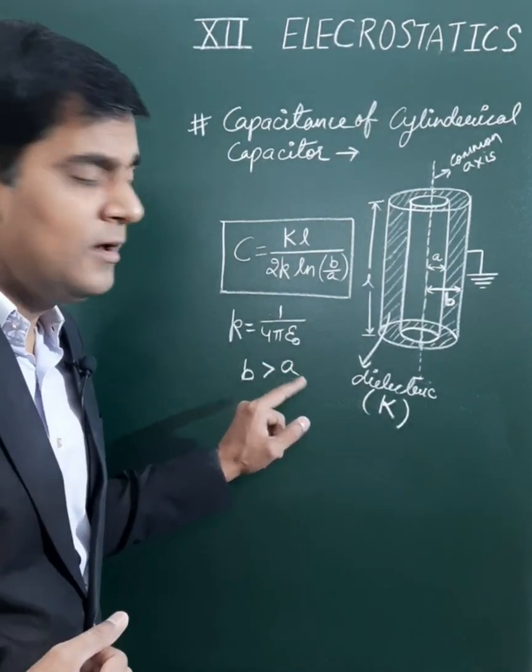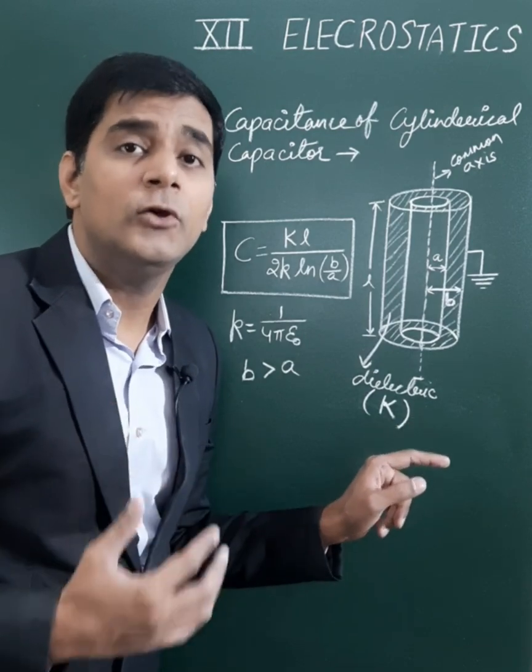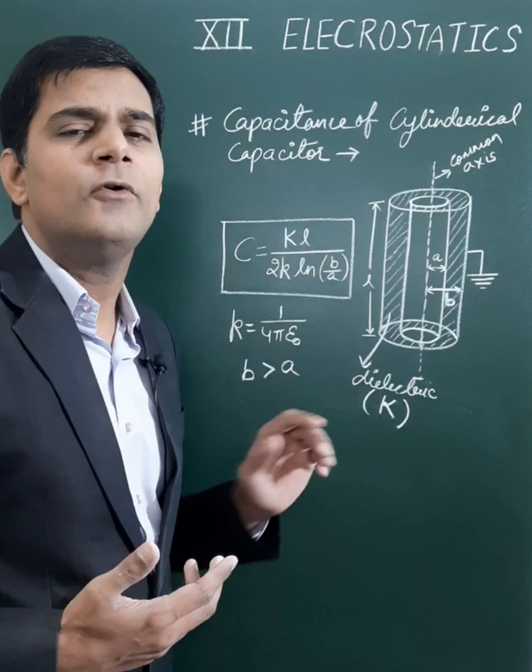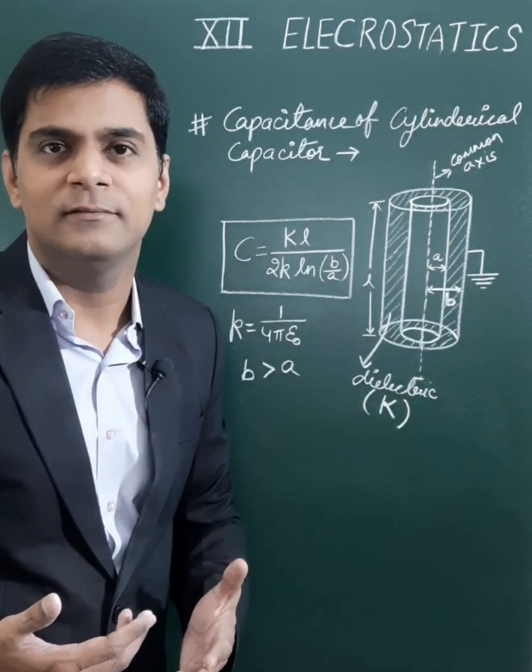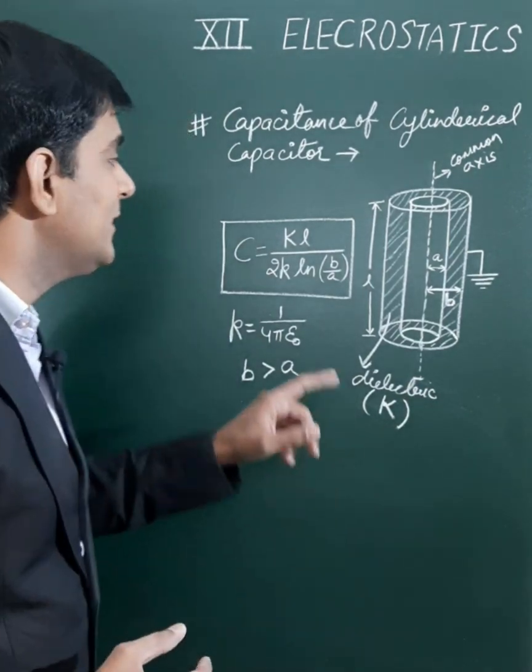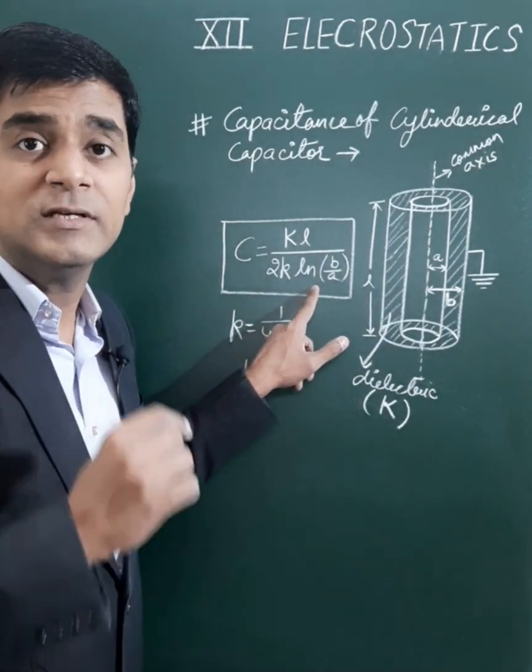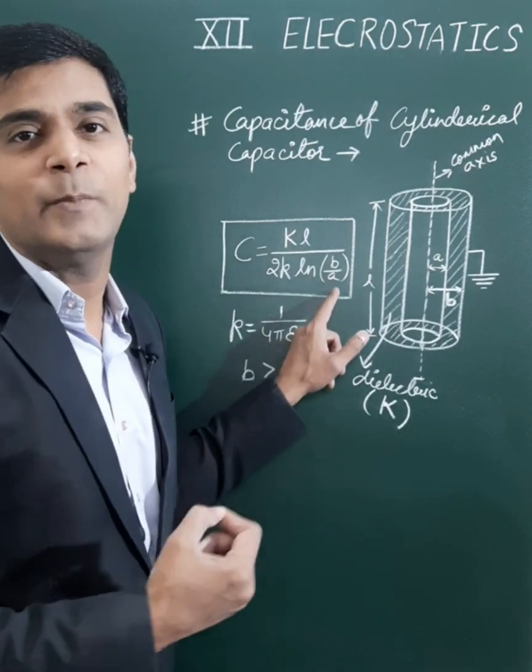If there is air or vacuum in place of this dielectric, then the dielectric constant for air and vacuum equals one. Here one more thing: the function ln b by a is the natural log function, which is log base e of b upon a.